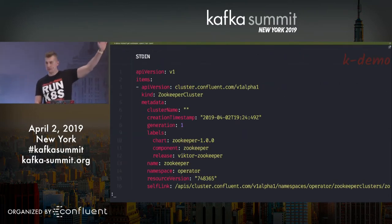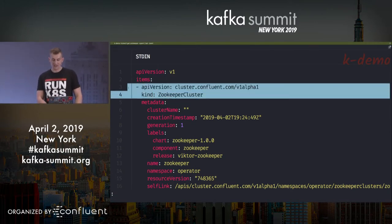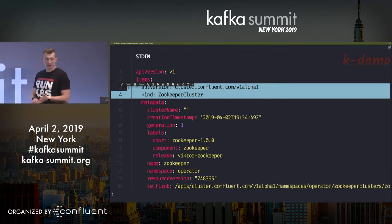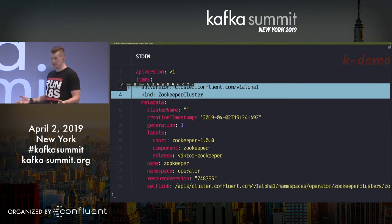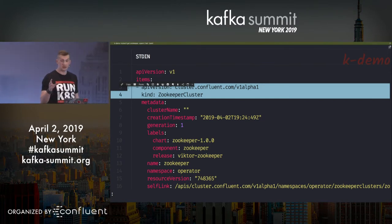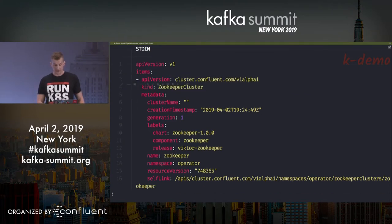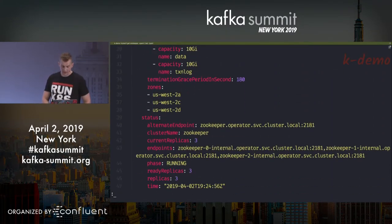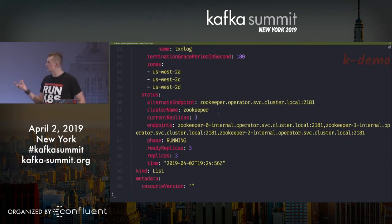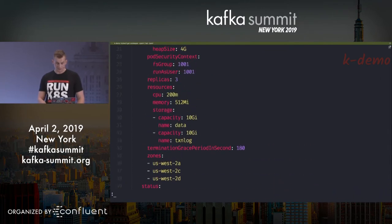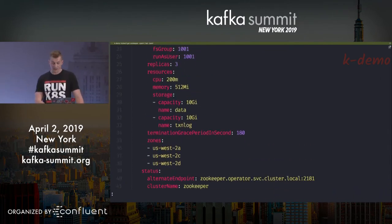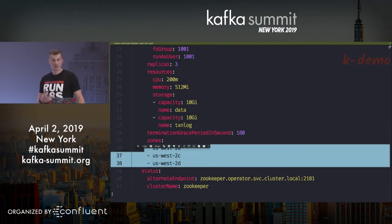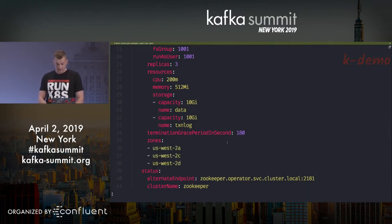How many of you use kubectl to work with your Kubernetes cluster? This is the default tool. How can we teach old dogs new tricks? With this approach, we can do 'get kafka' — no resource found. But 'get zookeeper' — there's one ZooKeeper! We can output it in YAML format. One cool thing is multi-zone deployment out of the box.